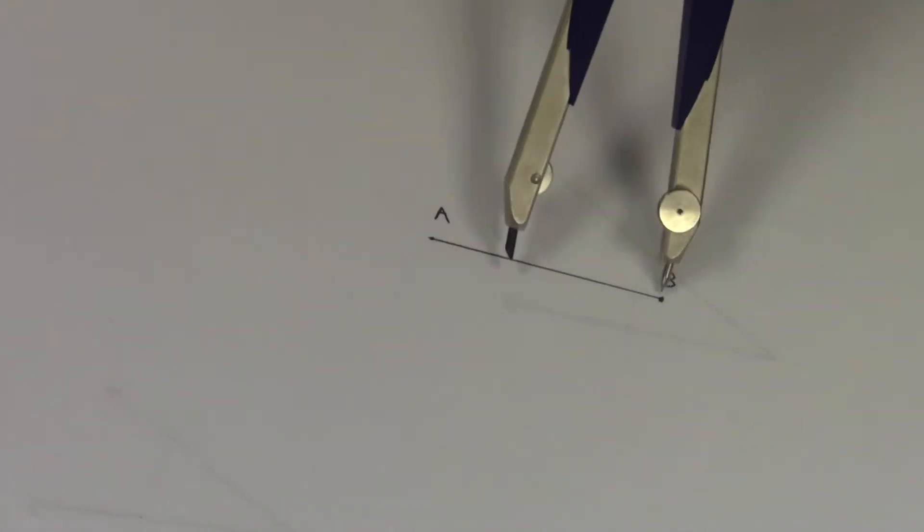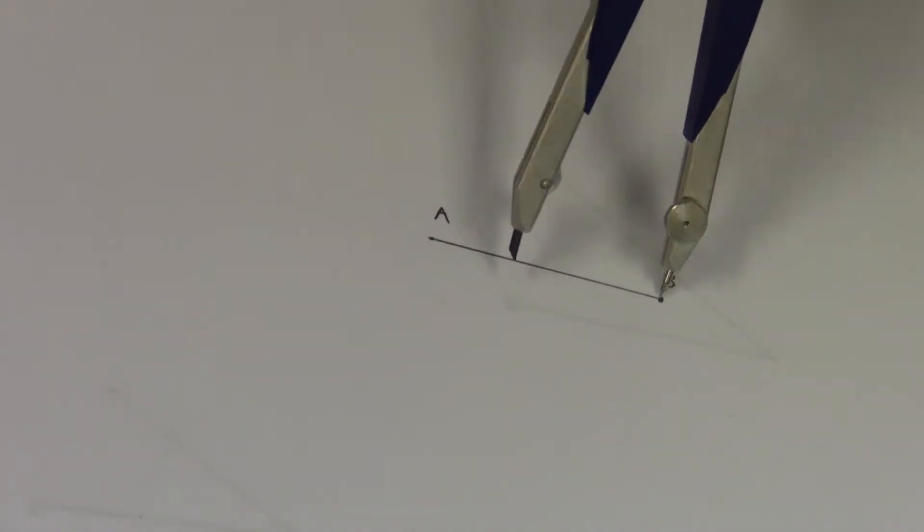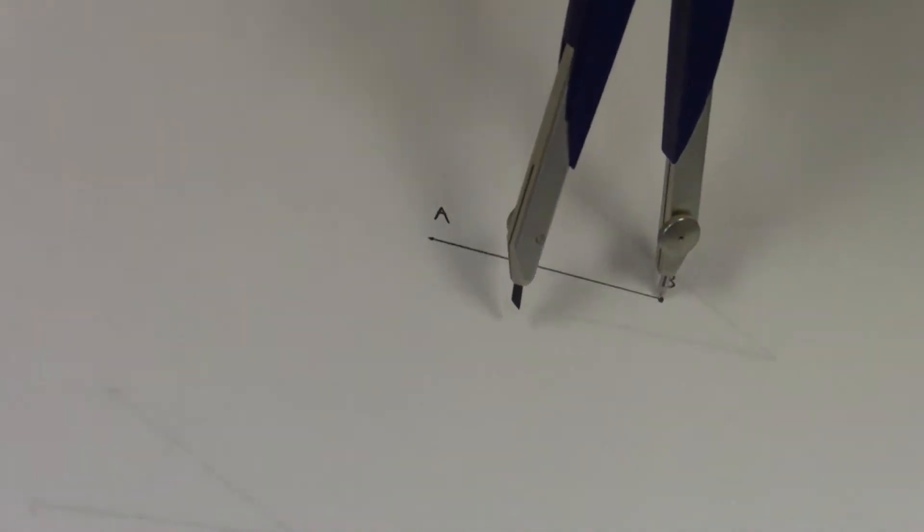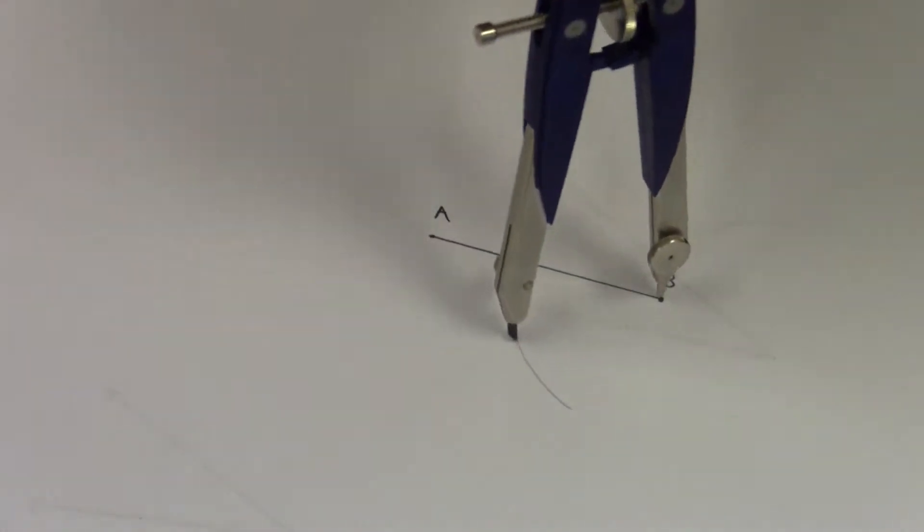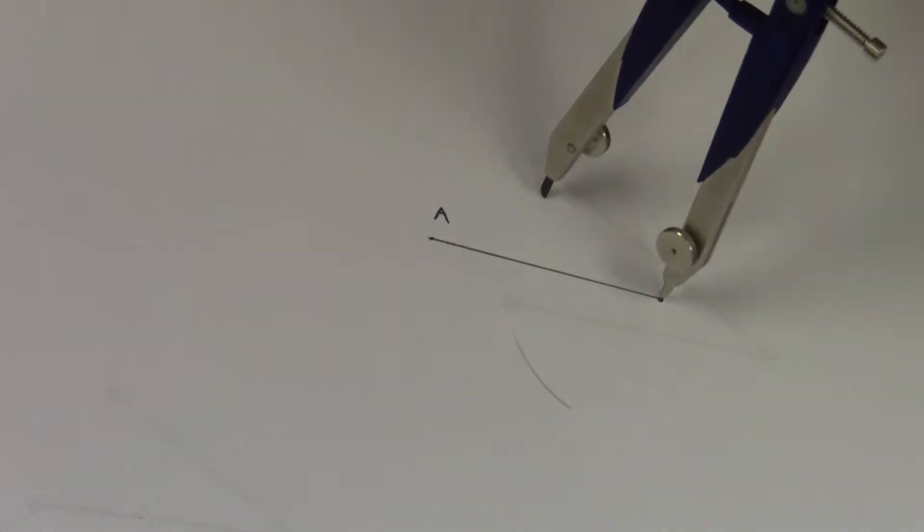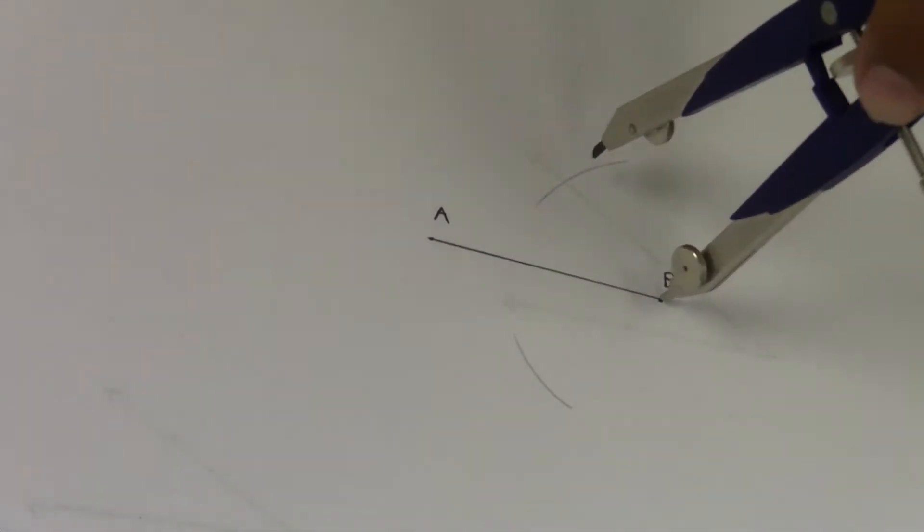So what you'll do is put your needle, in my case, on B. I'll go below and make a mark, and I'll go above and make a mark.